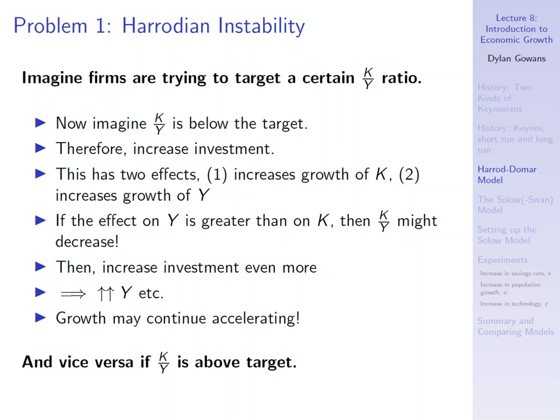And vice versa, if I'm above target, assuming the same process, you can imagine this leads growth to be slower and slower. This is the instability problem. In one case, this might lead to greater and greater inflation as demand is higher and higher than potential supply, and vice versa, this might lead to higher and higher recession or depression as demand is growing slower and slower relative to supply.